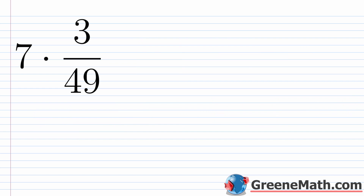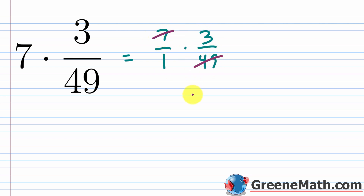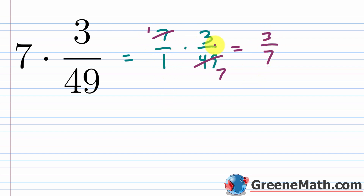For seven times three over forty-nine, write it as seven over one times three over forty-nine. Forty-nine divided by seven is seven, and seven divided by seven is one. So you have one times three equals three over one times seven equals seven, giving three-sevenths.